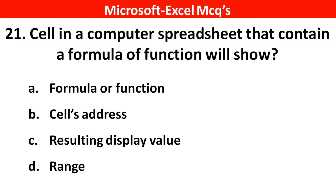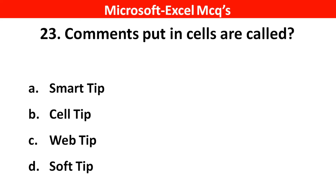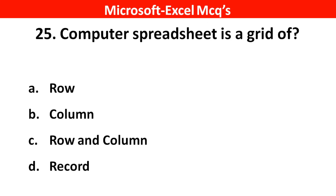Next question: cells in a computer spreadsheet that contains a formula or function show the resulting display value. Right answer is option C. Next question: comments can be added to a cell using? Right answer is option B, Insert Comment. Comments put in cells are called? Right answer is option B, cell tip. A spreadsheet cell highlighted with a heavy border is called? Right answer is option A, active cell. A computer spreadsheet is a grid of? Right answer is option C, rows and columns. Thank you.